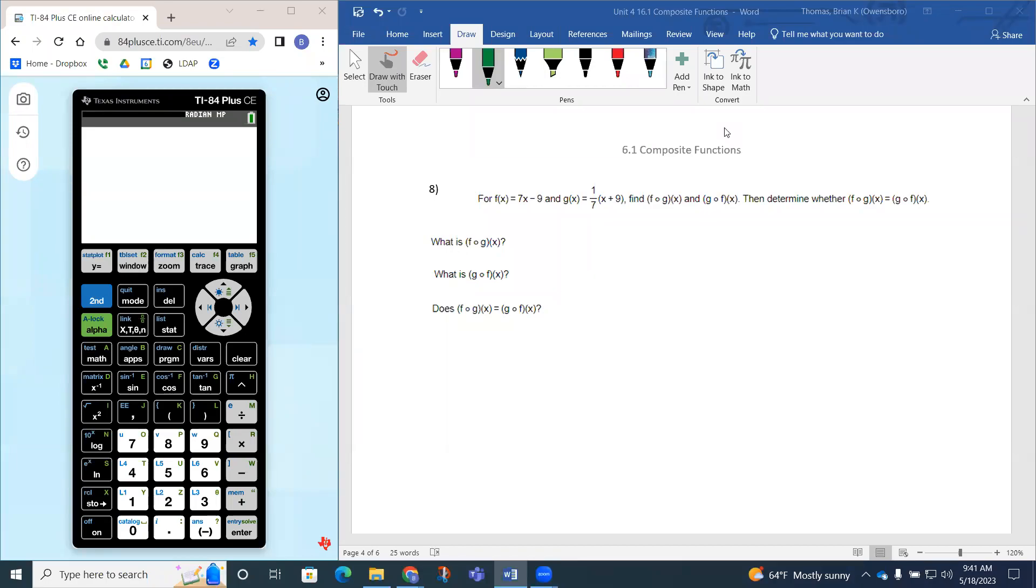So question 8 says for the function f of x equals 7x minus 9 and g of x equals 1/7 times the quantity x plus 9, find f of g of x and also determine g of f of x and then determine whether they're equal or not.